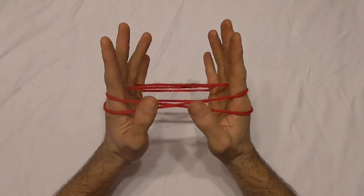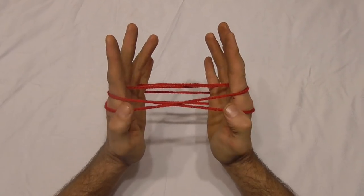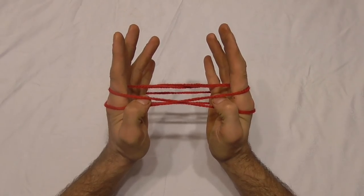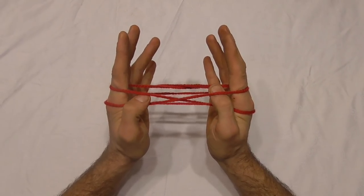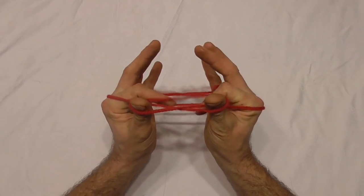Now you should see this cross in front of you. What I want you to do is go into those triangles and pick up the near pointer finger string with your thumbs and release the pointer fingers.